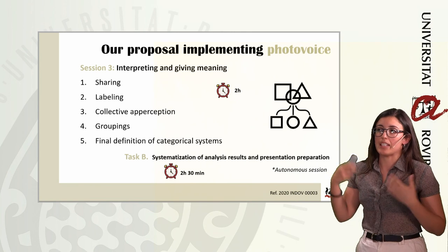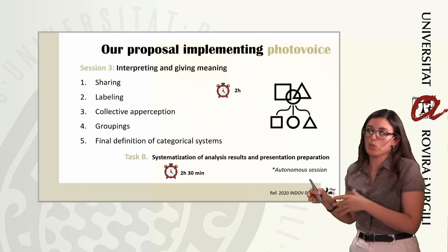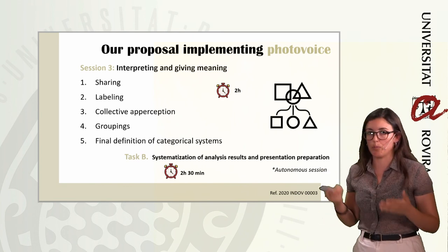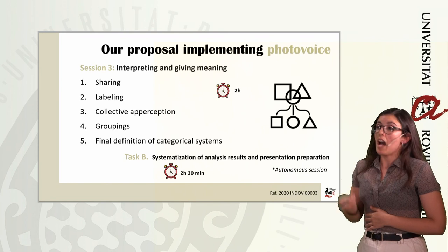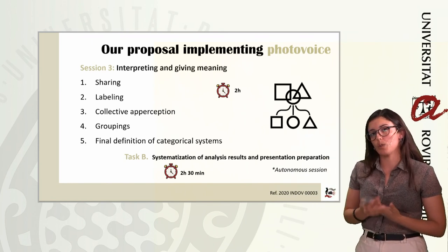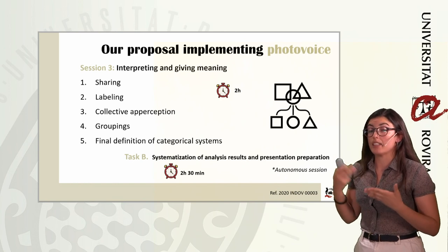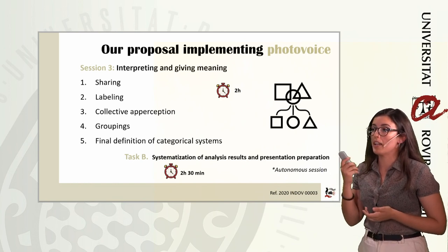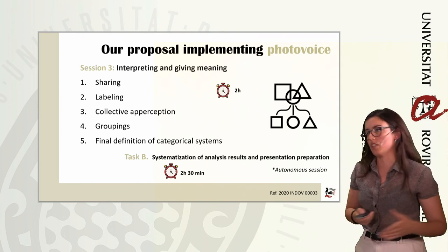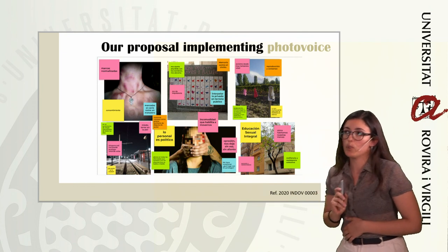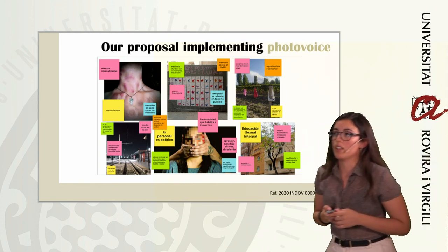In session three, students label, group, and build categorical systems — for example, typologies of violence or spaces in which violence is executed. We also propose an autonomous session for the systematization of analysis results and preparation of the presentation. Here we can see an example of the third session in which students put different labels on the different photographs.